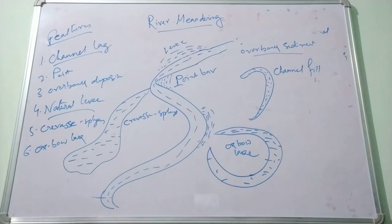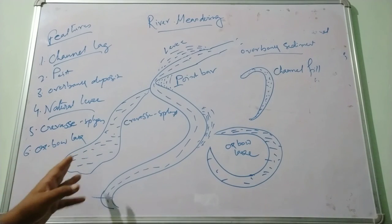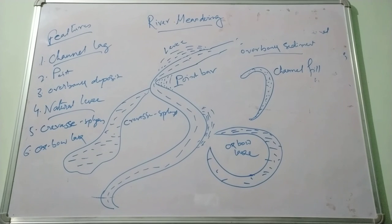This oxbow lake is created when the growing meanders intersect with each other and cut off a meander loop. Then the oxbow lake is created. So these are the basic features that have been found in the meandering belt and we will discuss next about the fluvial landform in our next classes. Thank you.